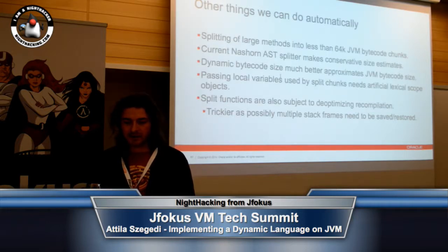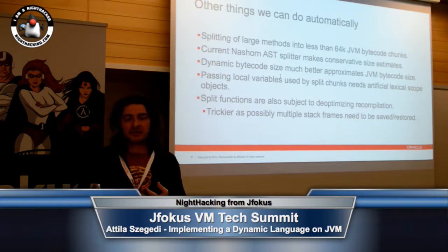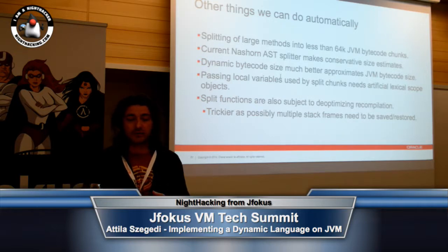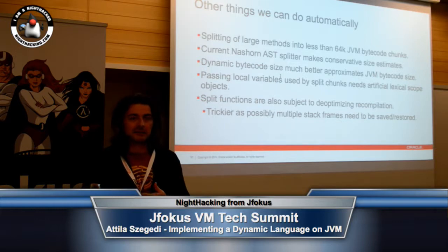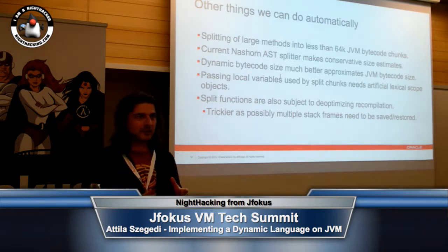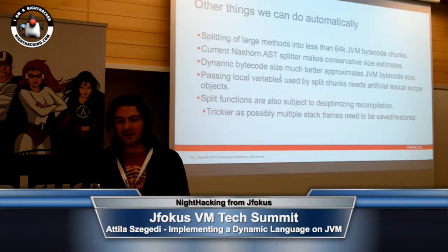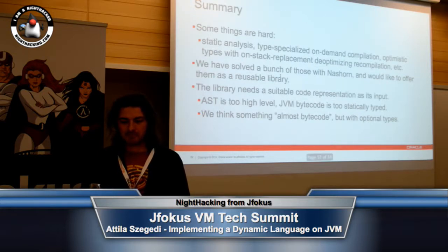We can do other things automatically. One of the nuisances that you have to deal with in dynamic languages on the JVM is that you need to split large methods into chunks that are less than 64K. Having had to write that, I don't want to write it again — it was not fun. Writing a splitter on top of an intermediate representation works much better because you have much better ideas of the actual sizes there.